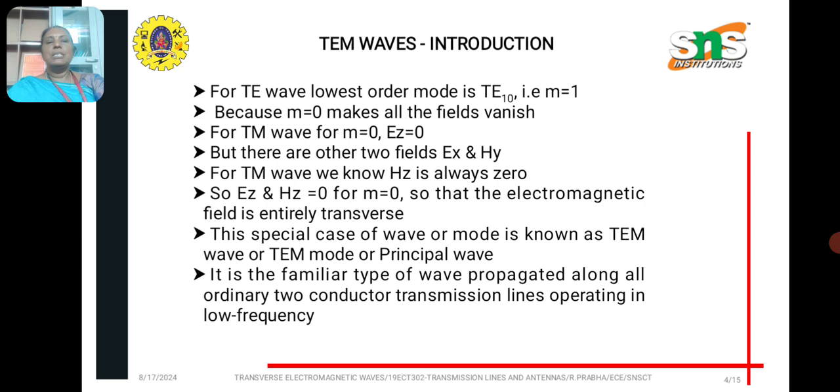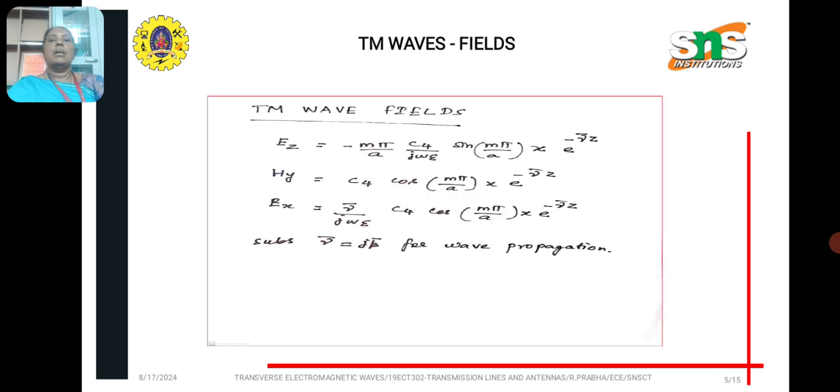It is the familiar type of wave propagated along all ordinary two conductor transmission lines operating in low frequency, and its fields are EY, HY, EX, we are substituting M is equal to zero.